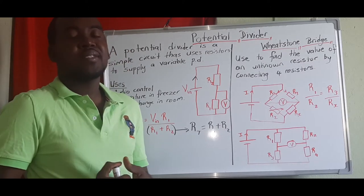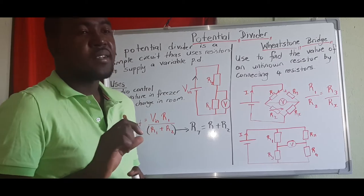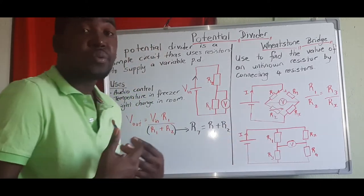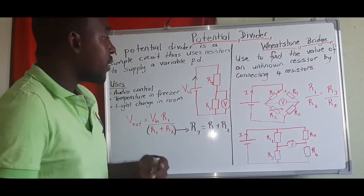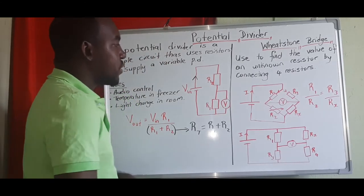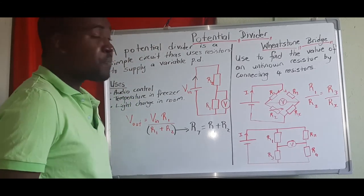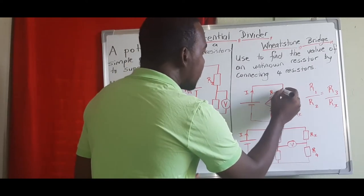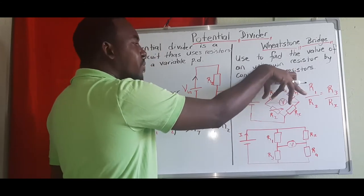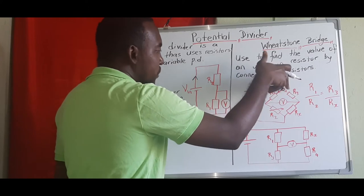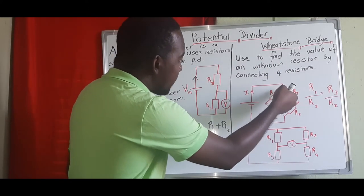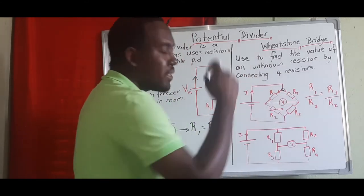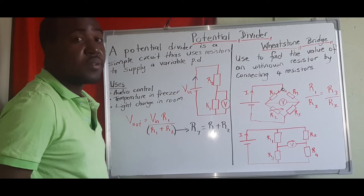The Wheatstone bridge was originally developed to measure the exact resistance value of an unknown resistor. We have four resistors because we know three but don't know the last one — R_x. When current passes in, it reaches a junction and splits: a portion passes through R1 and a portion through R3. The same current that passes through R1 passes through R2, and the same that passes through R3 passes through R_x.